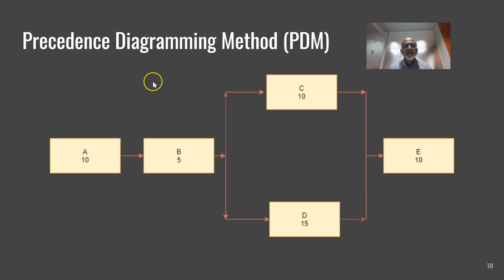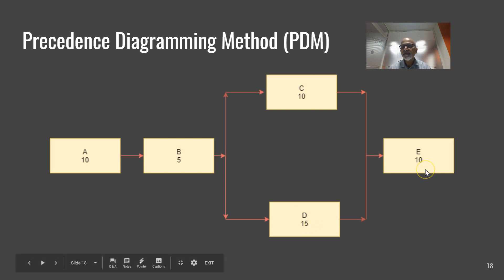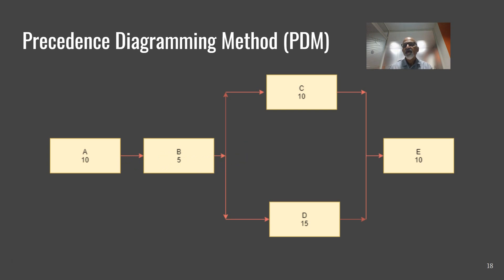This is the Precedence Diagramming Method, or PDM. Here we have activity A with a duration of 10 days, activity B with 5 days, and activity C with 10 days. D has a duration of 15 days and E has 10 days. We call this the Precedence Diagramming Method or Activity on Node diagram — AON — because activities are within the nodes and connected by arrows.